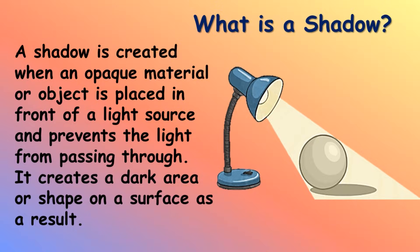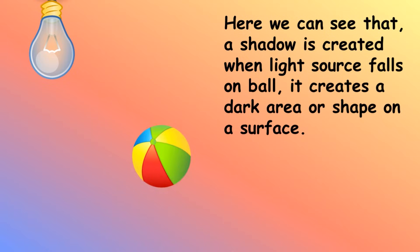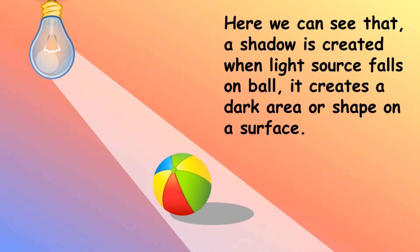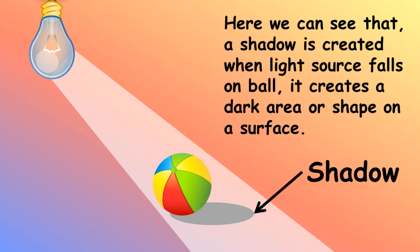What is a shadow? A shadow is created when an opaque material or object is placed in front of a light source and prevents the light from passing through. It creates a dark area or a shape on a surface as a result. Here we can see that a shadow is created when a light source falls on a ball — it creates a dark area or a shape on a surface.